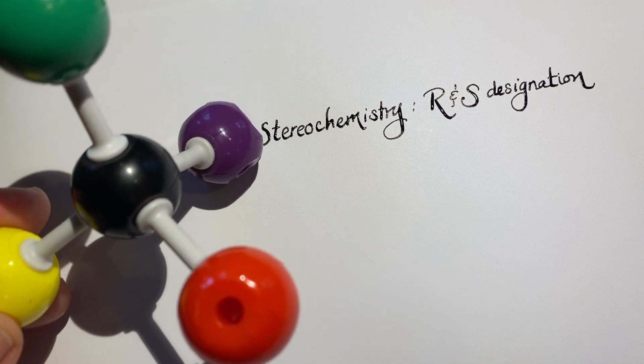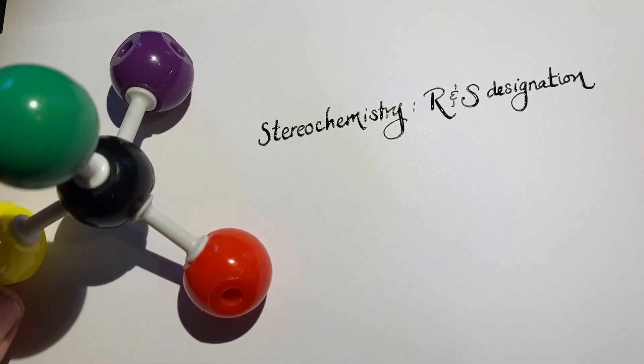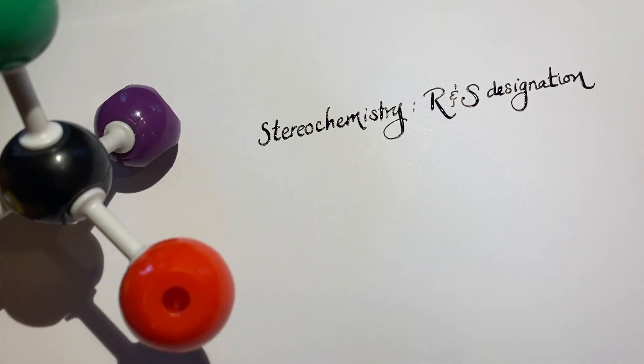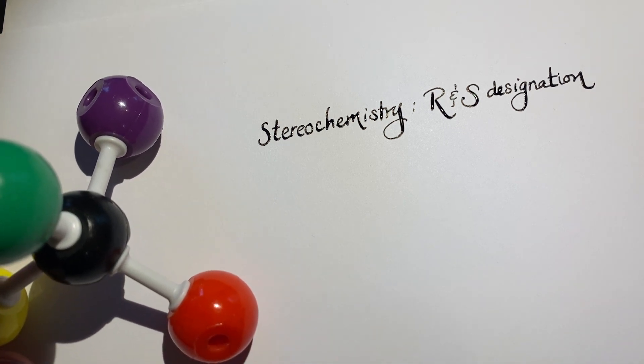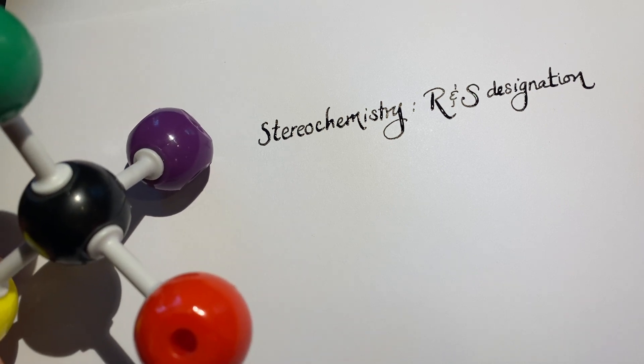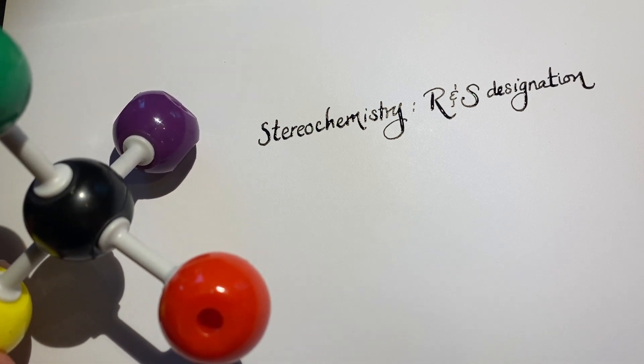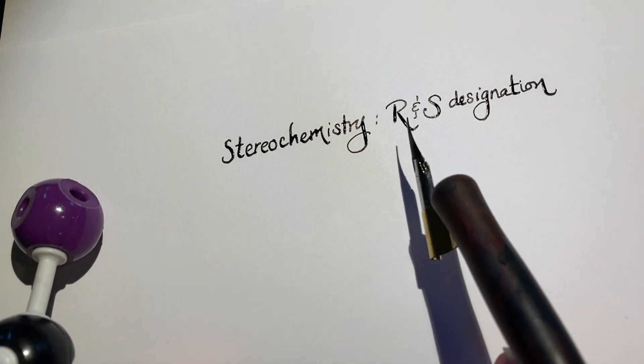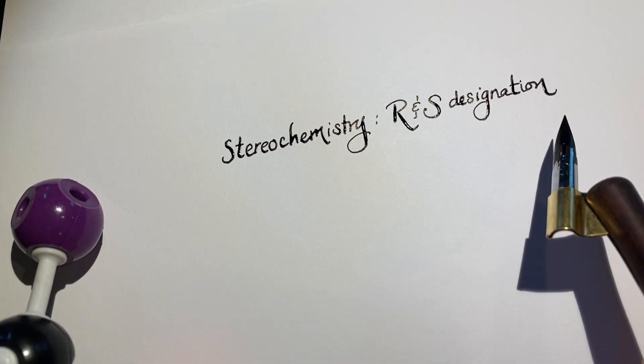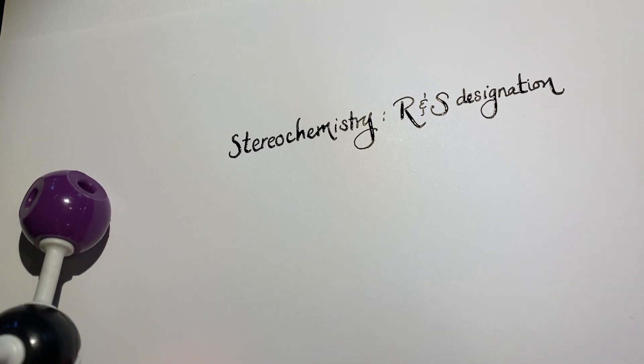And so, if we were to take a mirror image of this, we would not be able to superimpose it. Because that means there is a difference between the two mirror images, we need to somehow distinguish them from each other. That's where we get into this R and S designation, to be able to distinguish two chiral centers from each other.